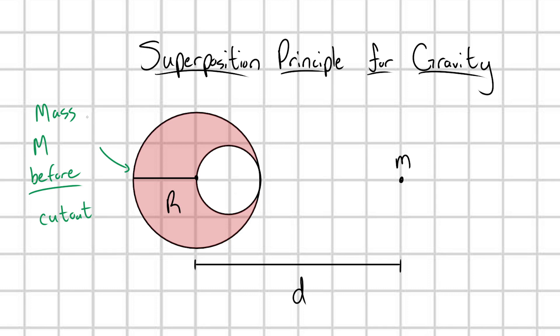Before the cutout, this planet had some mass capital M, and it was uniformly dense. I've put this little point mass m here, and we want to find the gravitational force on little m. So how can we find the gravitational force on our little mass m here?